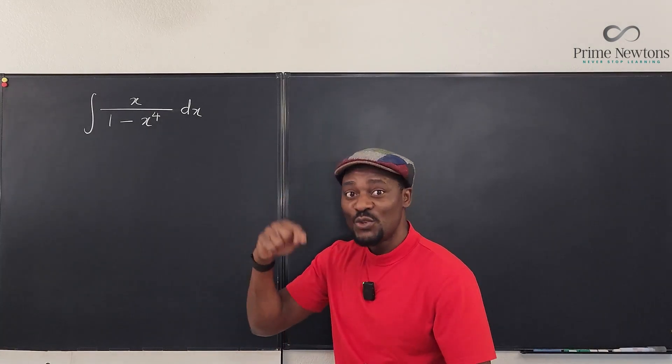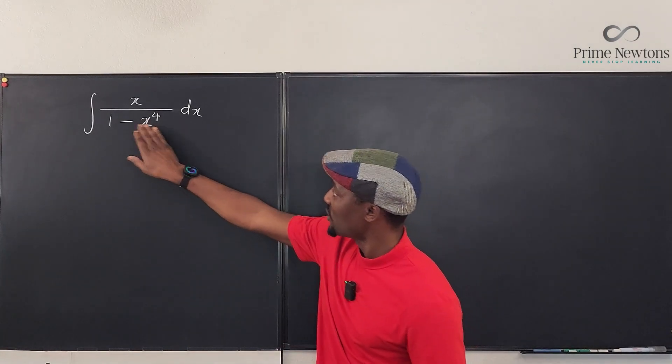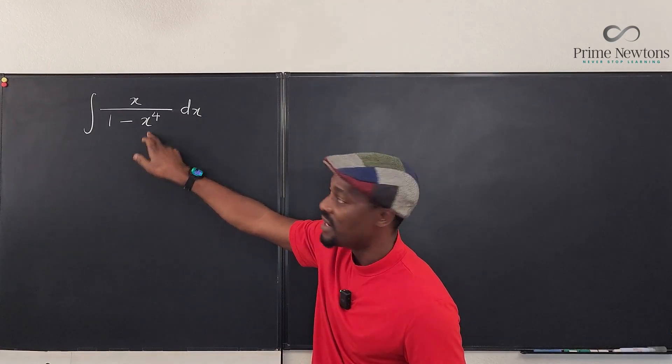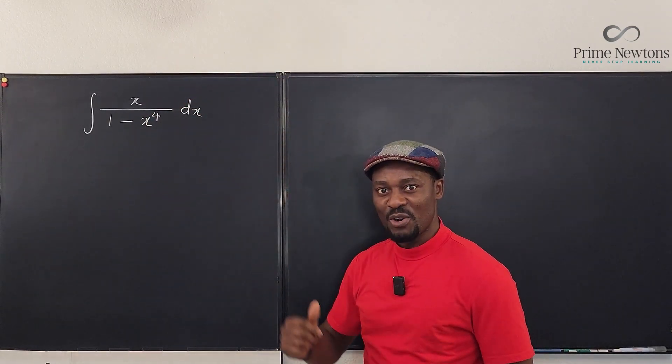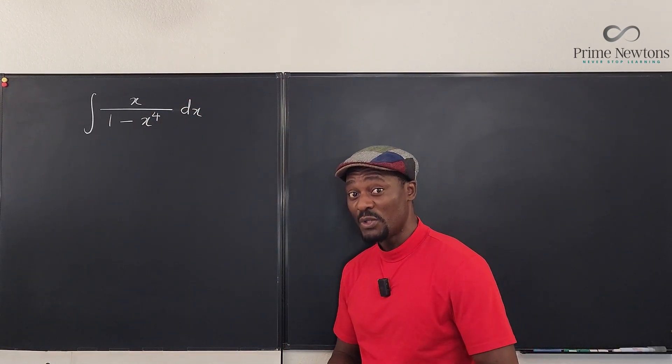So the smartest choice to make is to say let u be x² and then you can plug in x² here. So this is 1 - u² and then you can get rid of xdx.